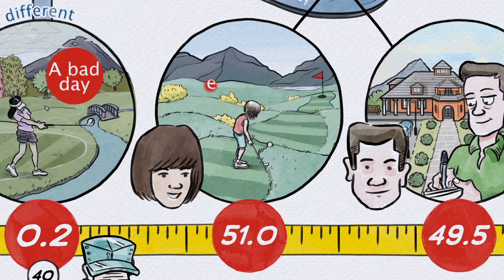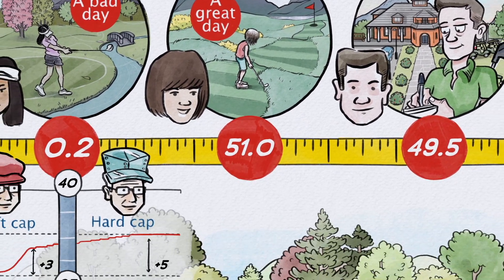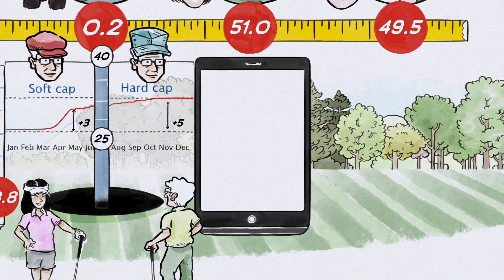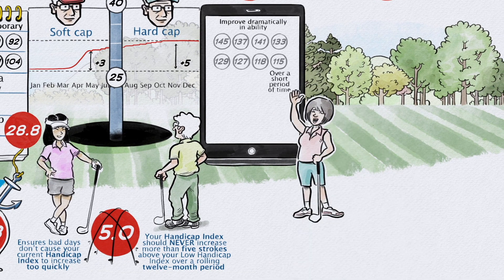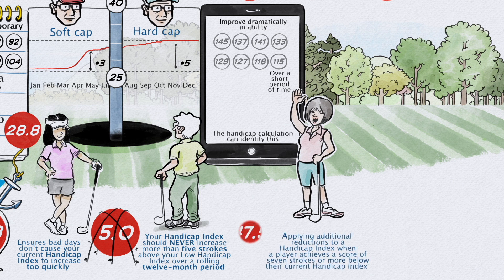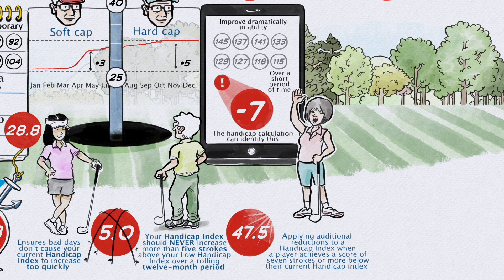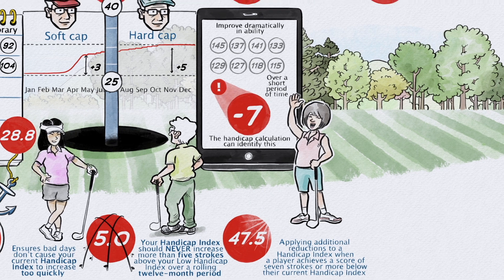Players have great days too. Juniors and beginners in particular can improve dramatically over a short period of time. The handicap calculation can identify this, applying additional reductions to a handicap index when a player achieves a score of seven strokes or more below their current handicap index.